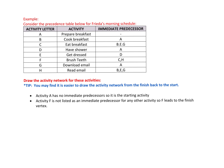Starting the activity network: here's the start vertex. The first activity is A — she prepares breakfast. Looking at the table, activity B has A as its predecessor, so B must come after A. So I draw a vertex then activity B.